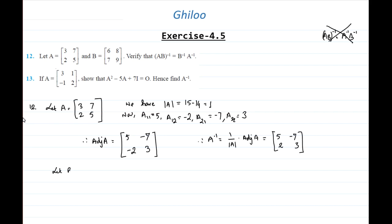Similarly we'll find the inverse of B, since both B inverse and A inverse are required. Let B equal [6, 8; 7, 9]. The determinant of B is 54 minus 56, which is minus 2.